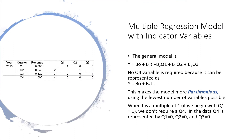Here I have a multiple regression model with indicator variables, which are the same thing as dummy variables in regression. They will represent the quarters. There is no Q4 in the model because it can be represented by the simple regression equation y equals beta-naught plus beta-1 times t, where every fourth quarter fits in for t. The full model is: y equals beta-naught plus beta-1 times t plus beta-2 times Q1 plus beta-3 times Q2 plus beta-4 times Q3. Quarters 1, 2, and 3 are represented as either 0 (not that quarter) or 1 (it is that quarter).